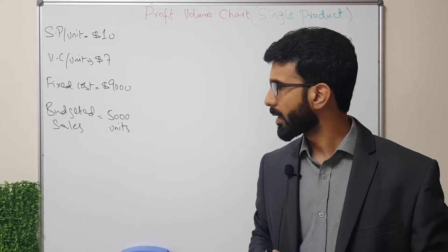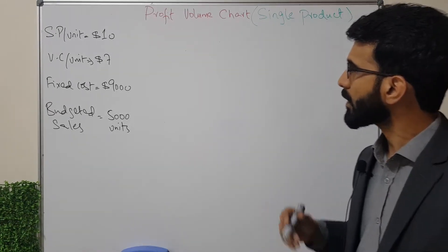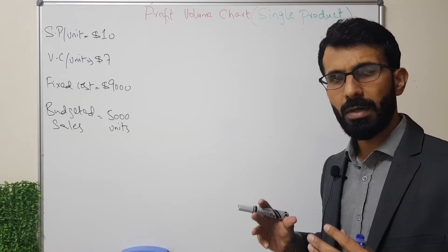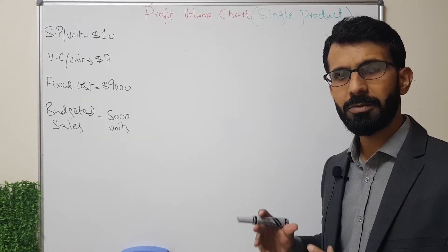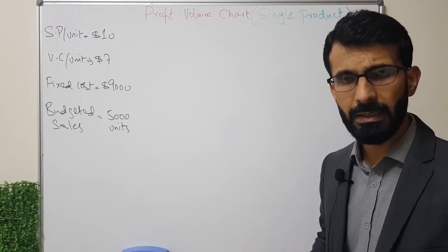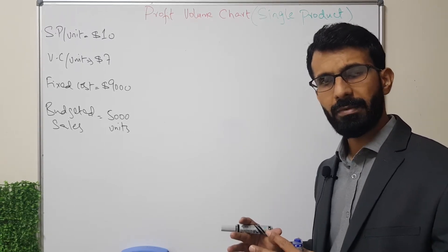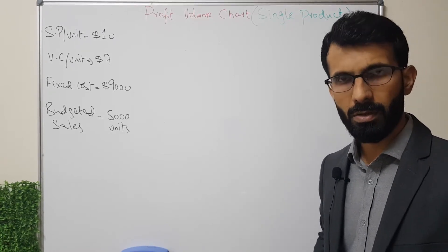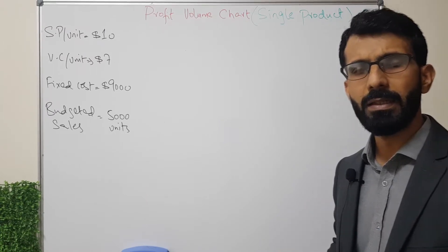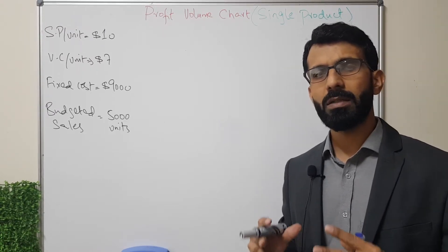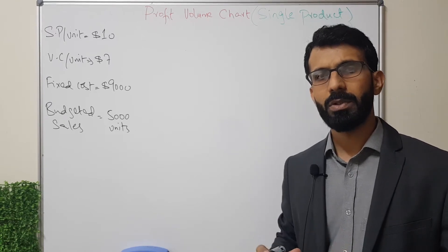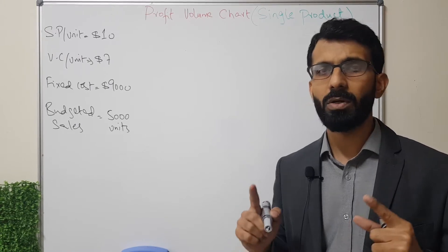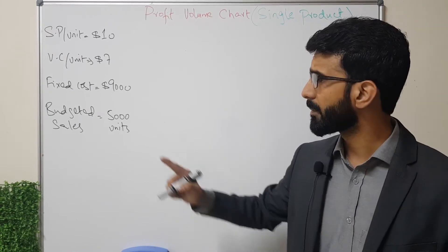In this chart we show the changes in the amount of profitability with respect to changes in the volumes of production and sales. On one side we have the volume of production and sales, and on the other side we have profit or loss. If the contribution is zero — if we are not producing and selling even a single unit — we will have a loss.